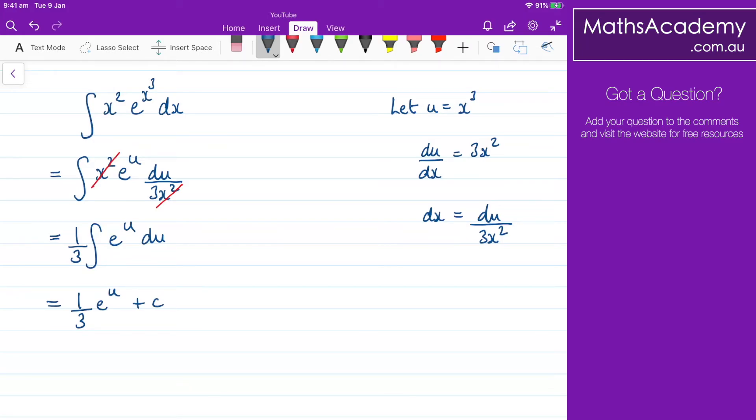Now, the last step is to substitute back in for u. So I've got e to the u, but u is x cubed. So x cubed. And that's all over 3 plus the constant of integration.